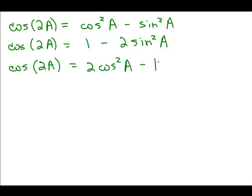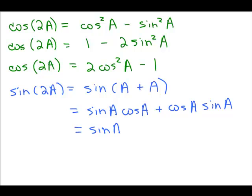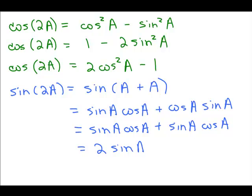Now let's figure out the sine of 2A. We write 2A as A plus A and use the formula for the sine of a sum: sine of the first times cosine of the second, plus cosine of the first times sine of the second. By the commutative property, cosine A sine A is the same as sine A cosine A, so these are like terms — giving us 2 sine A cosine A. That's the only formula for the sine of 2A.